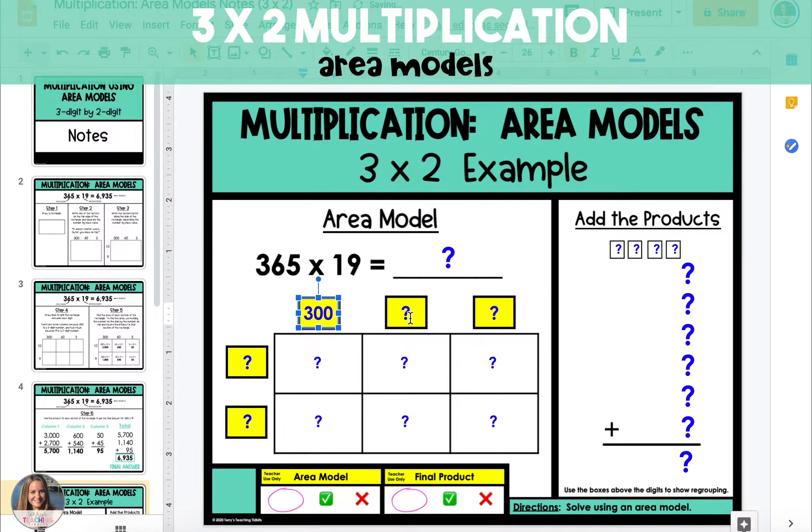So 365 becomes 300, 60, and 5. Each number gets its own column, so there are three columns in our area model.